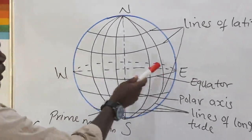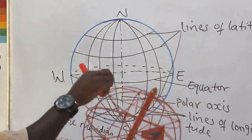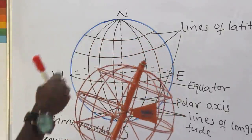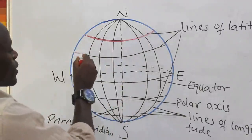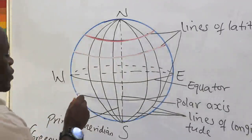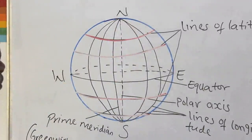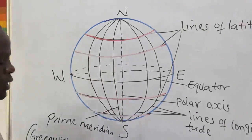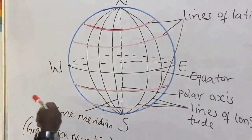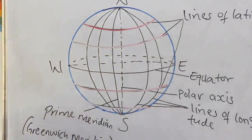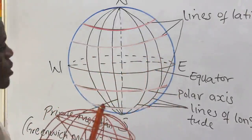On the diagram we have north, south, east, and west. The line at the center is called the equator. The other lines above and below the equator are the lines of latitude. On the east and west we have the lines of longitude. They are found on the west and east of the prime meridian. These are the lines found on the surface of the earth.